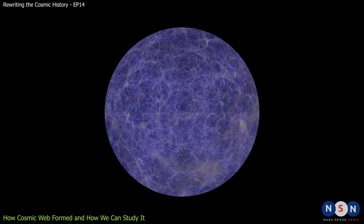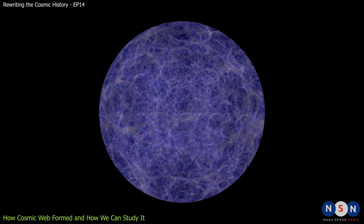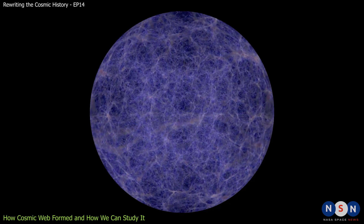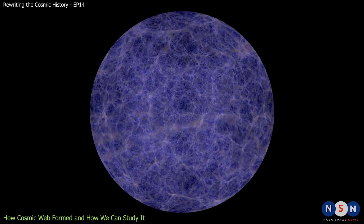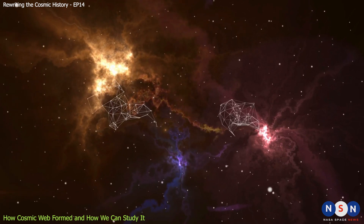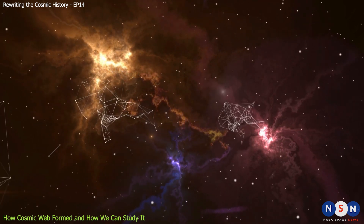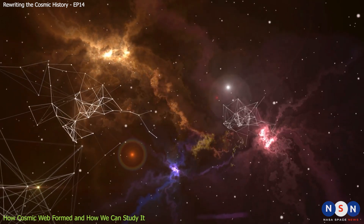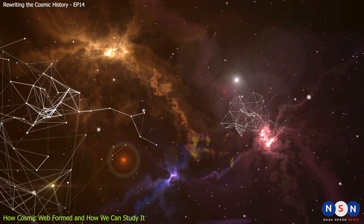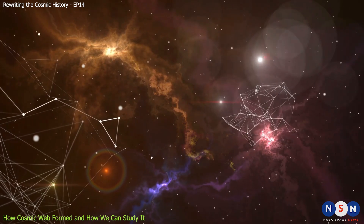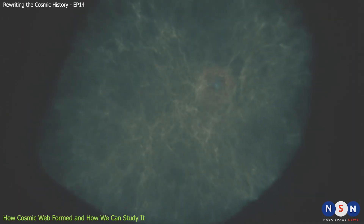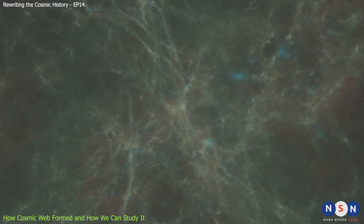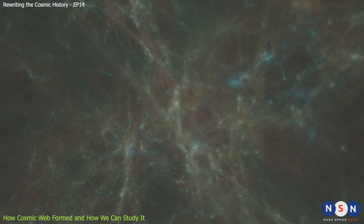The term cosmic web was coined in 1996 by Richard Bond from the University of Toronto, who was inspired by the work of Yakov Zeldovich. Zeldovich and his collaborators showed that tiny fluctuations in the density of matter in the early universe could grow into large-scale patterns under gravity, forming sheets, filaments, and knots of matter. These patterns were later confirmed by observations of galaxy surveys and simulations of structure formation.